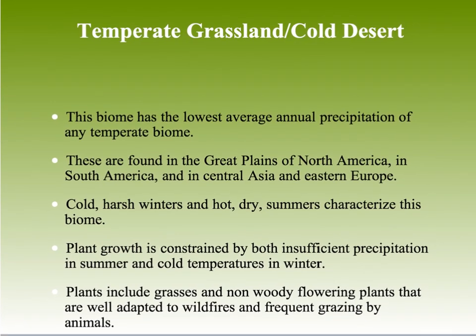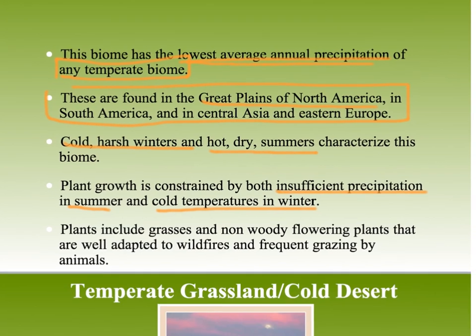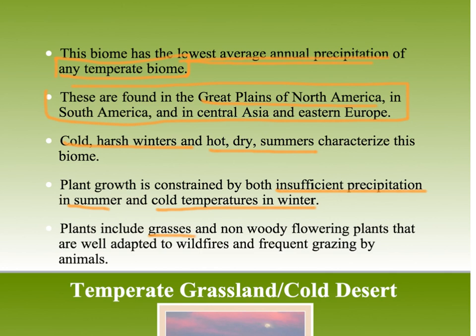Temperate grassland and cold desert — in the temperate grassland, you have the lowest average annual precipitation of any temperate biome. This is the Great Plains of North America. It has cold, harsh winters and hot, dry summers. Because of insufficient precipitation in summer and cold temperatures in winter, plant growth is pretty constrained, so what we get are lots of grasses and low-growing flowering plants.